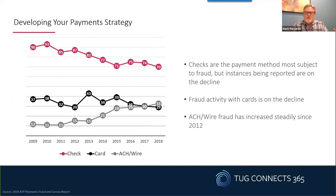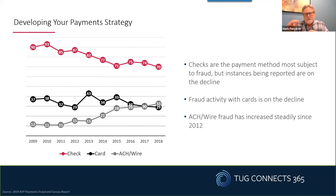When you start to look at your payment strategy, this AFP Payments Fraud and Control Survey report shows that checks are still the highest fraud vector today. ACH and wire are still pretty high as well, while card continues to drop — it's much more difficult to commit fraud with cards. Over the last 18 months because of the pandemic, fraudsters have really been working on getting ACH payments redirected to their own bank accounts instead of the vendor's. So it's a big deal.